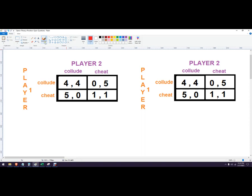Let's solve the game for the competitive equilibrium. If player two colludes, player one is better off cheating. If player two cheats, player one is better off cheating. This is known as a dominant strategy because they're going to cheat regardless of what the other player does.